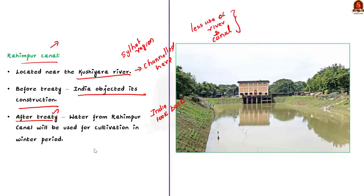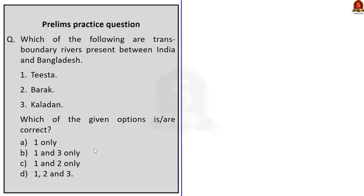Through this agreement, India and Bangladesh will become closer, and it will also reduce Chinese influence in Bangladesh. All issues between India and Bangladesh should be smoothly ironed out. In this discussion, we saw the economic importance of the Kushiyara River for Bangladesh, what is boro rice cultivation, and the importance of the Rahimpur Canal.